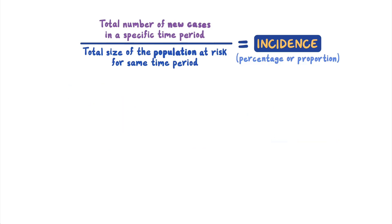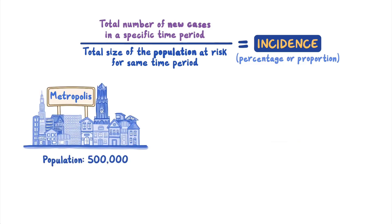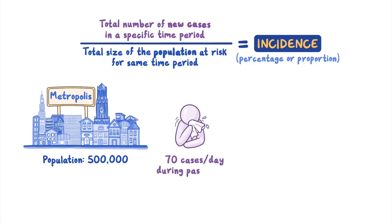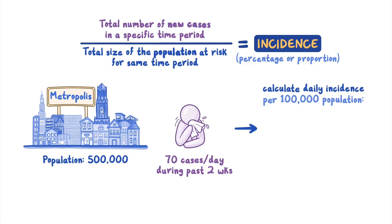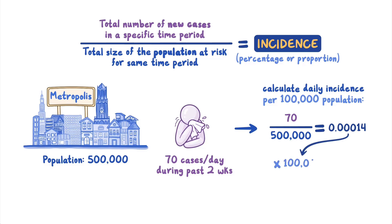In another example, we might find out that in Metropolis with a population of 500,000 people, 70 cases were detected each day, on average, during the past two weeks. To calculate the daily incidence per 100,000 population, divide 70 by 500,000, then multiply by 100,000, which is 14 per 100,000 people.